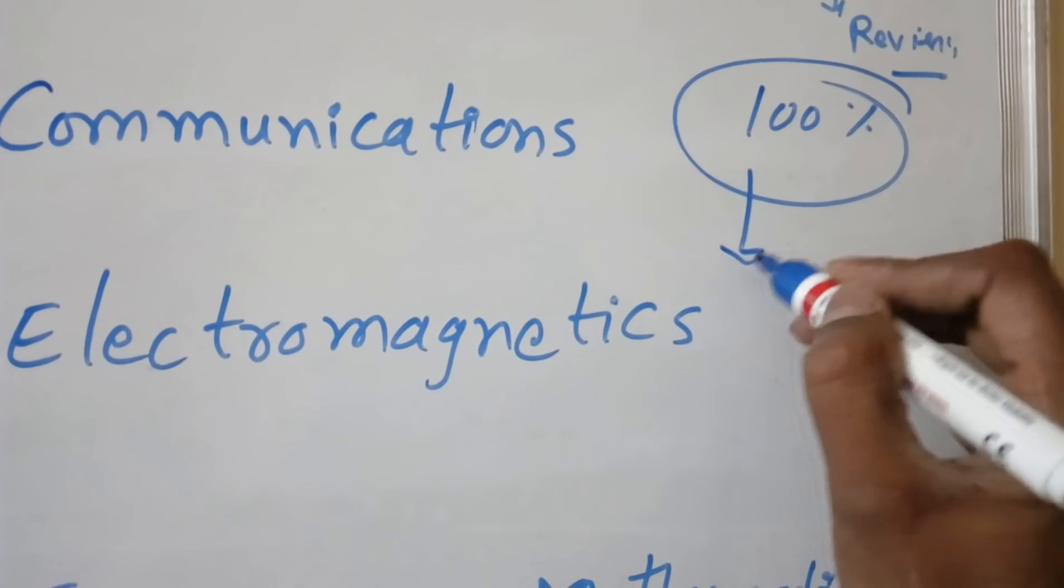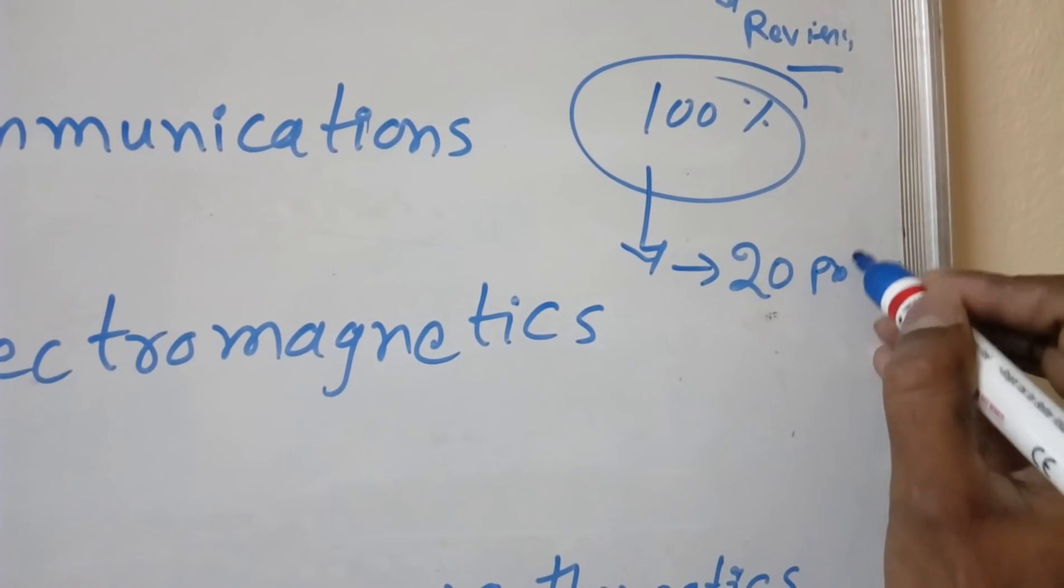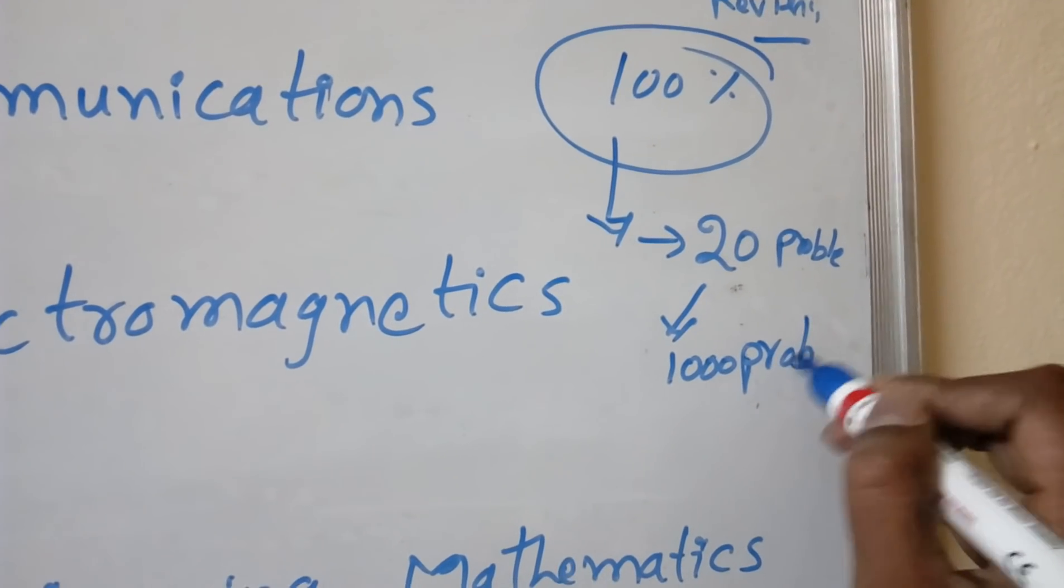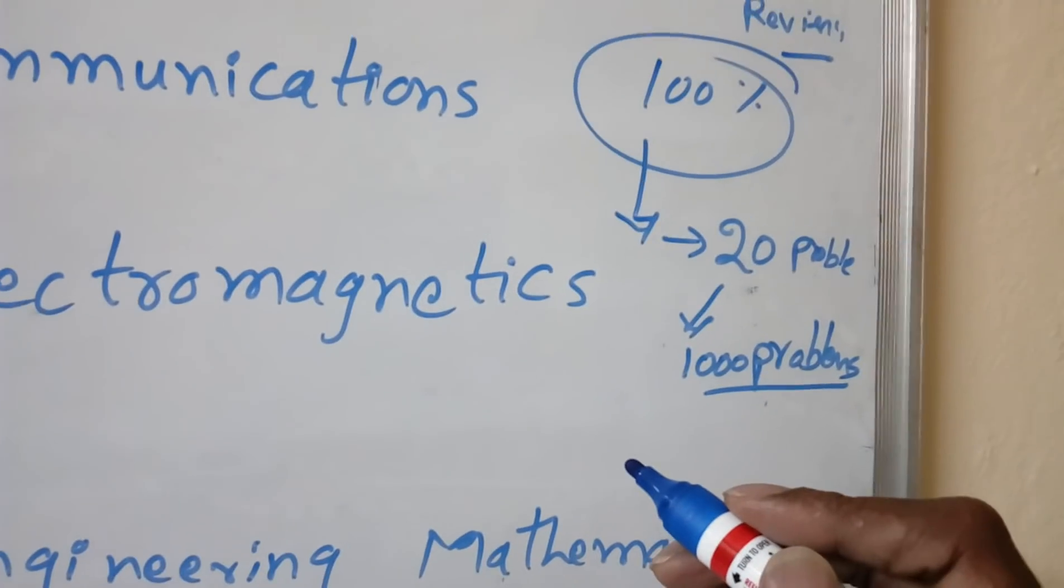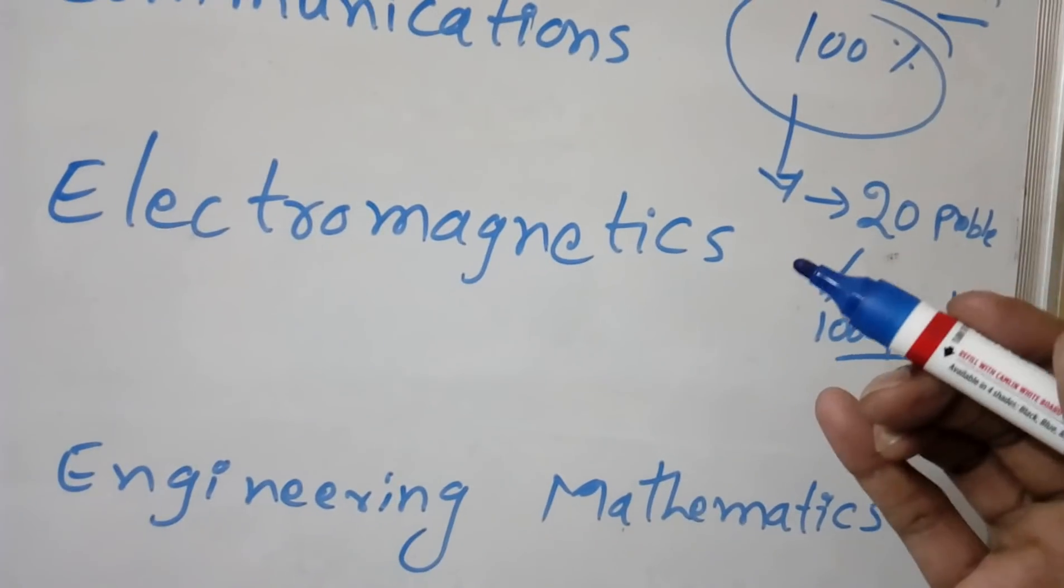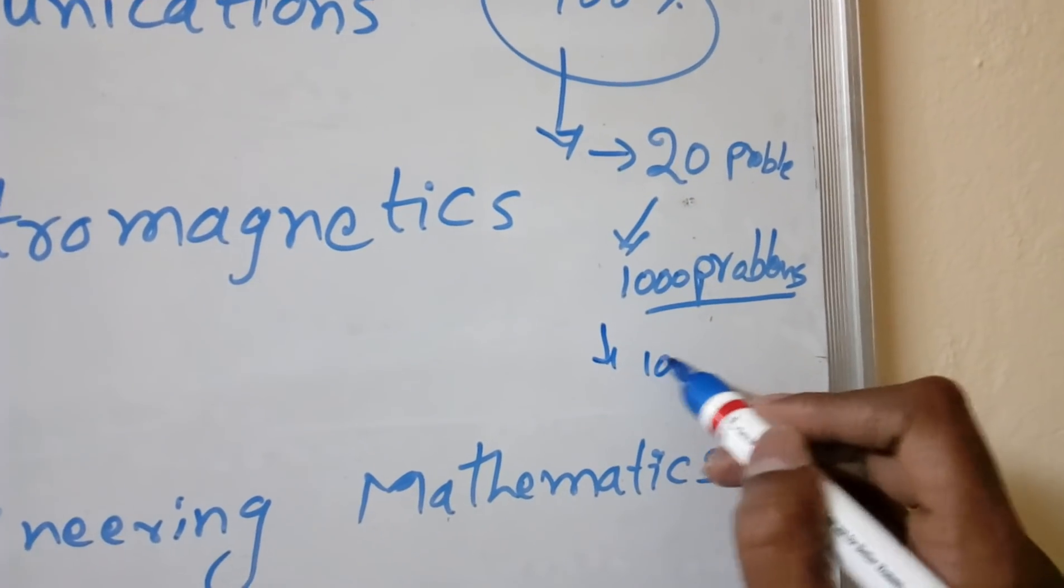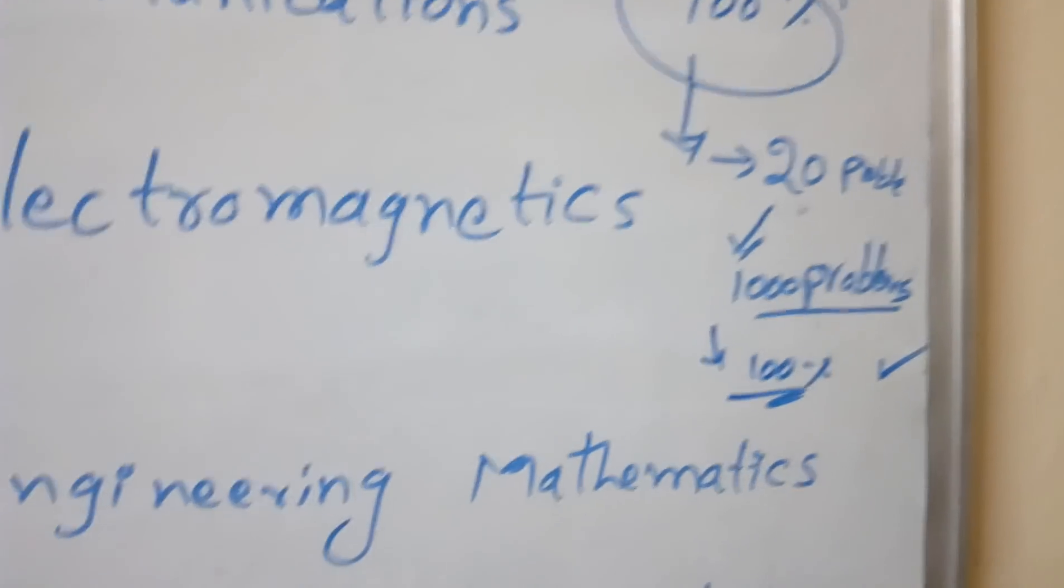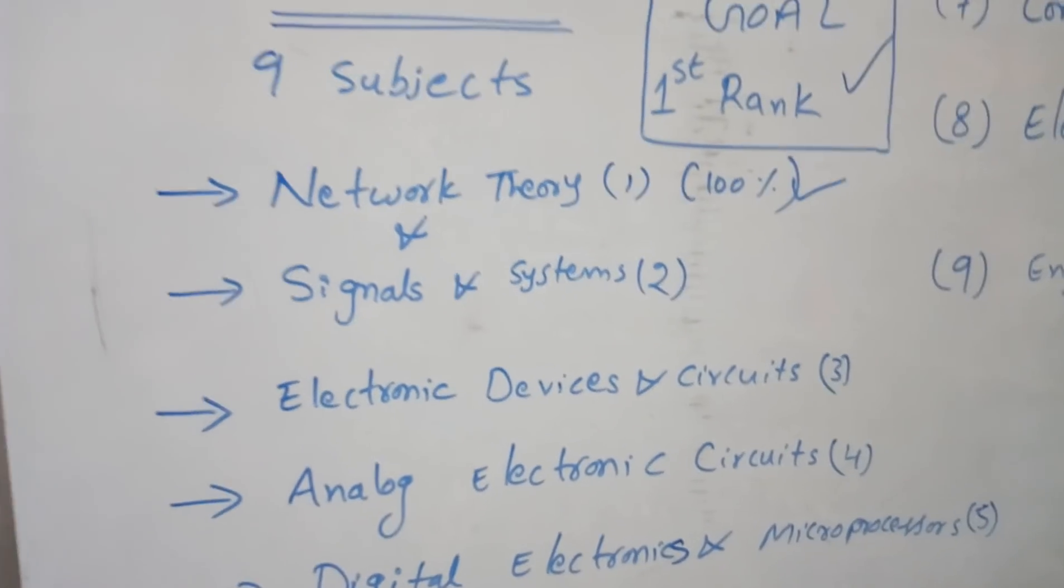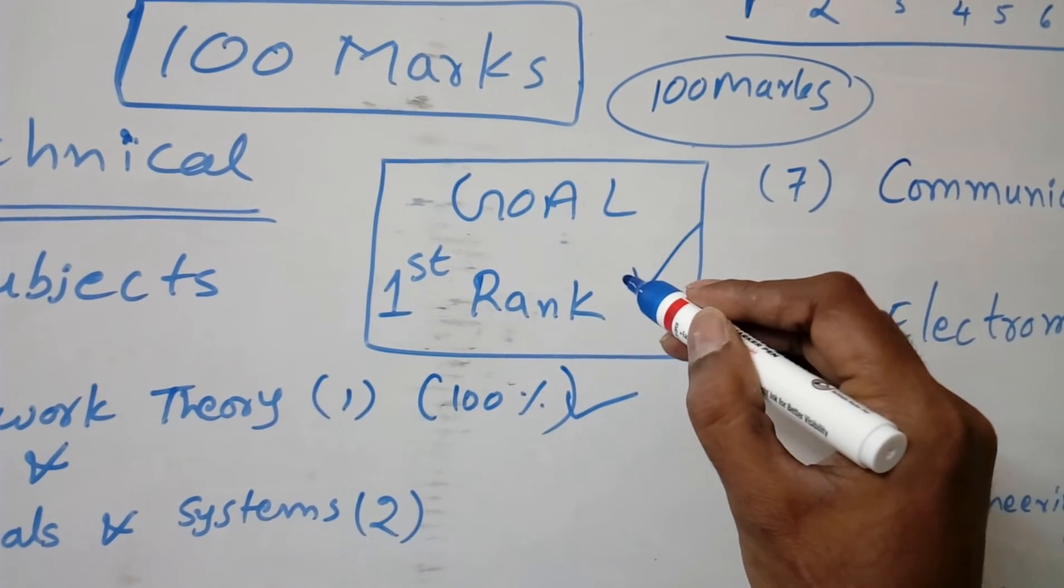For each topic we will train you to do 20 problems on each concept, and I will give 1000 problems for each subject. I will go through many books and search for questions. You have to do them on your own. When you do 1000 problems on each subject, you will be 100 percent sure on that subject.